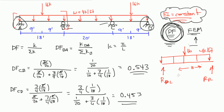So you have 16 going down, and you're going to add to that 18 times 4, and that's going to equal 88. So that means, since this is all symmetrical, reaction L is equal to reaction R, and that's equal to 44. So each of the reactions are 44.